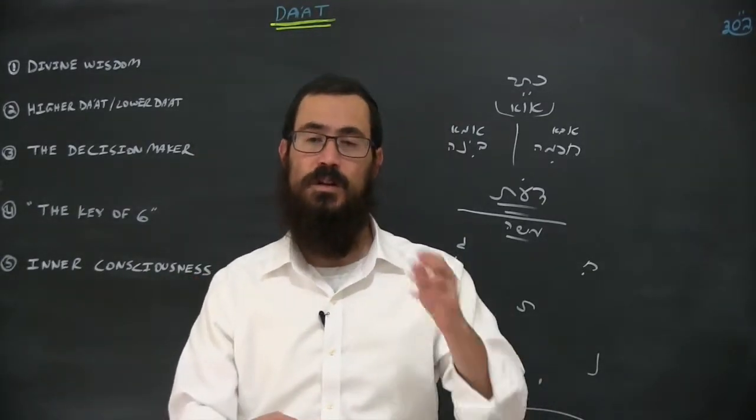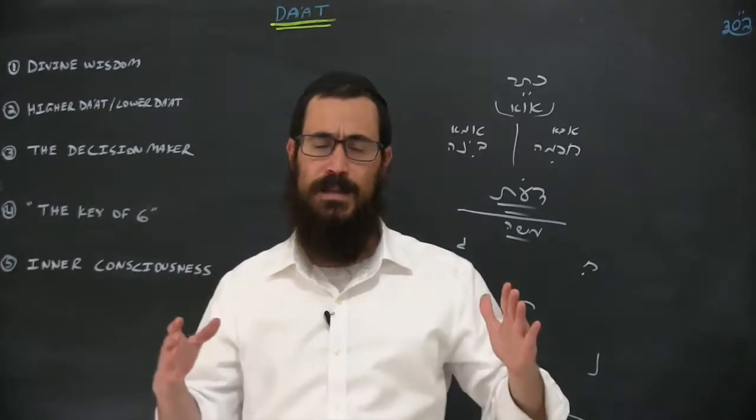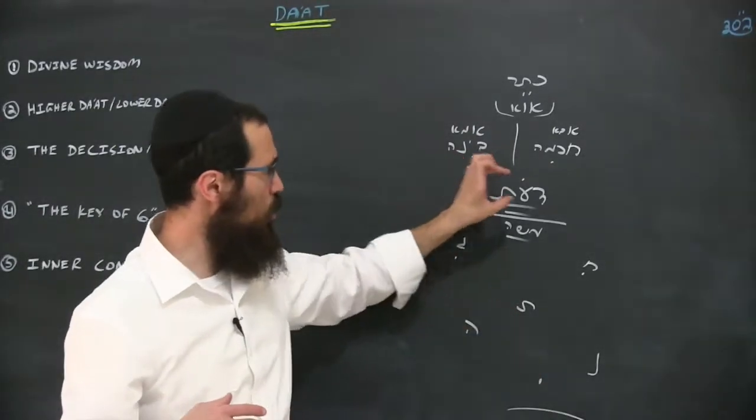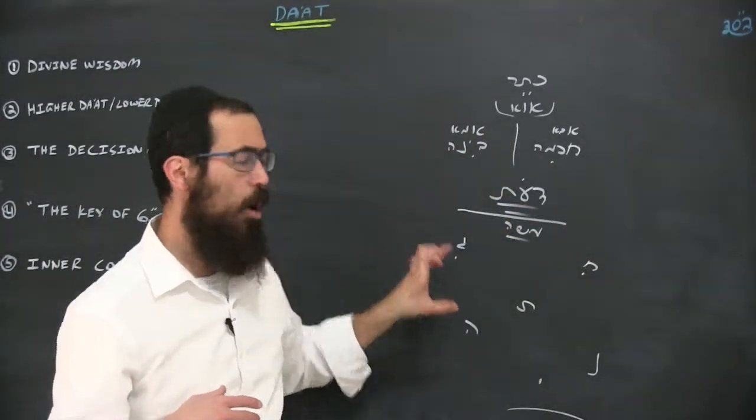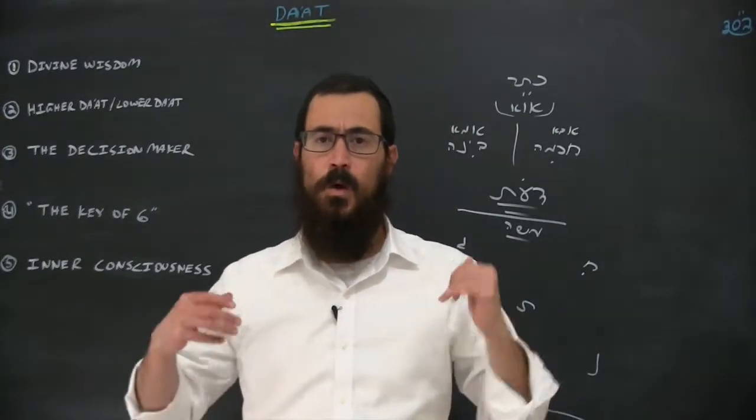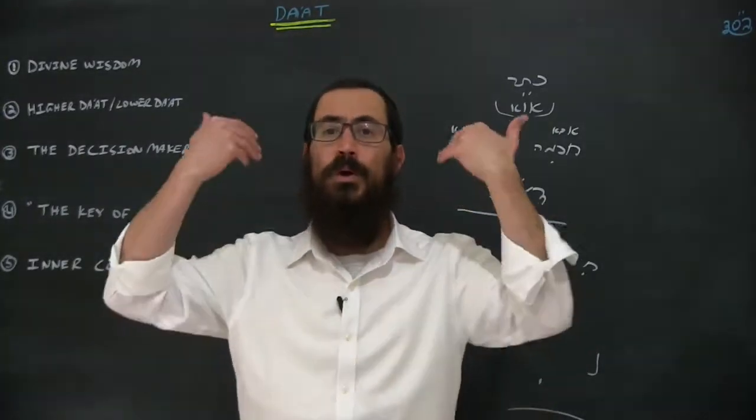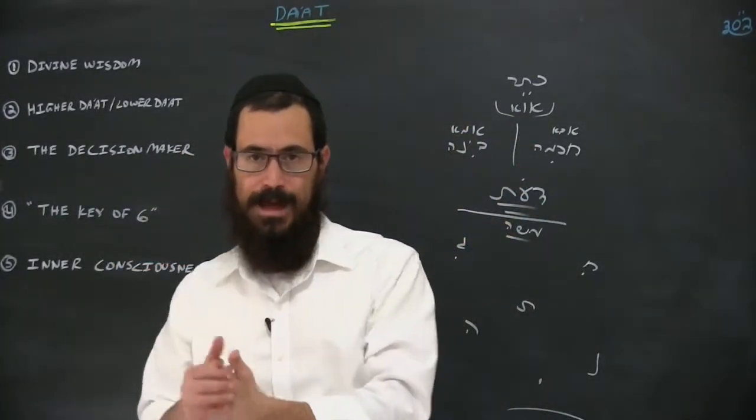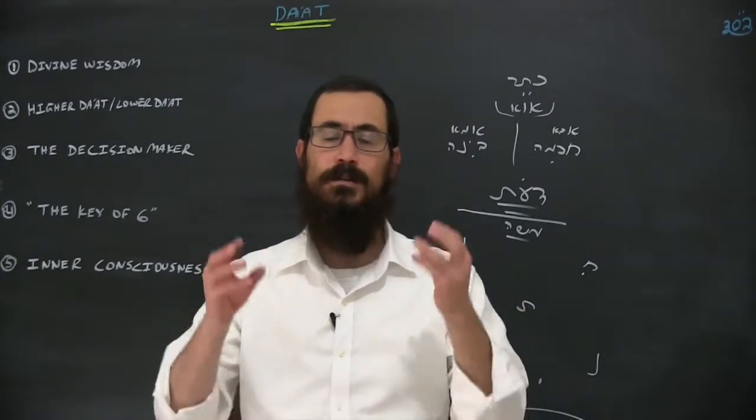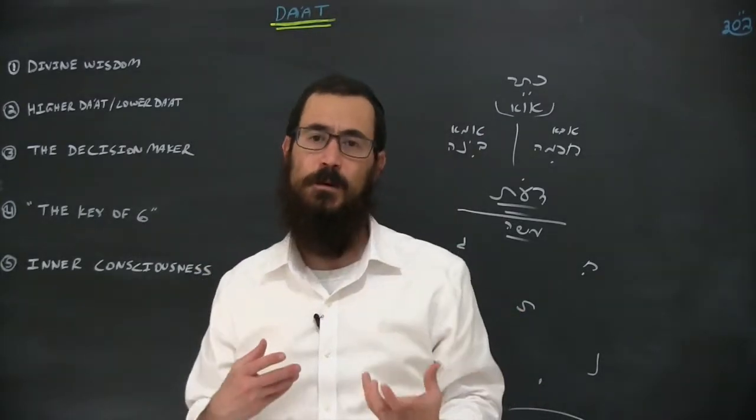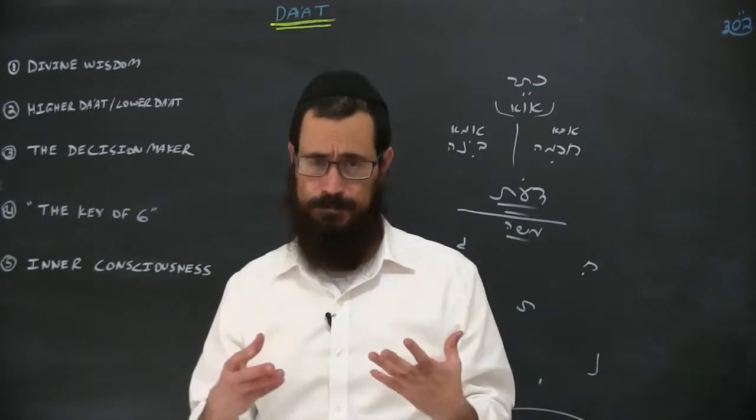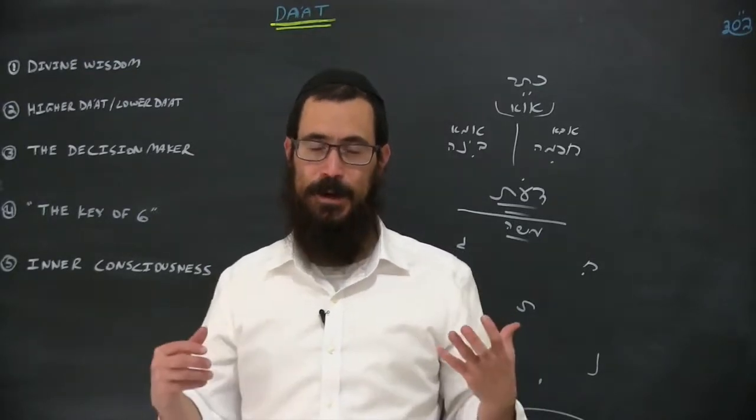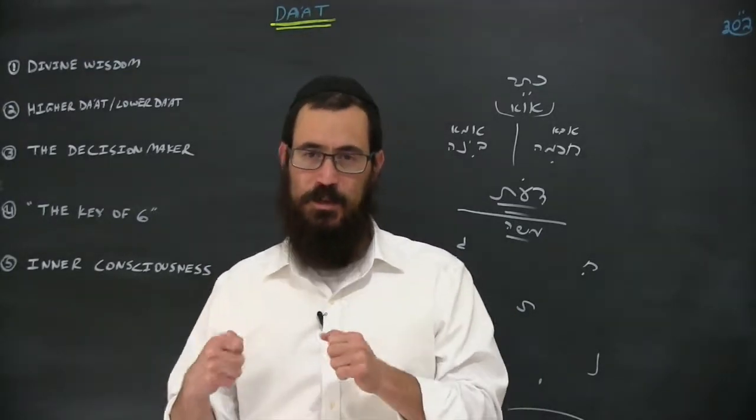Of course, this is like a lifelong process and we need the dat to work in tandem with all of the middot. Essentially, when the middot are born from the dat, then we've got what is called tikkun hamiddot, the fixing of the middot. Way easier said than done, but essentially by understanding that we do have that power.